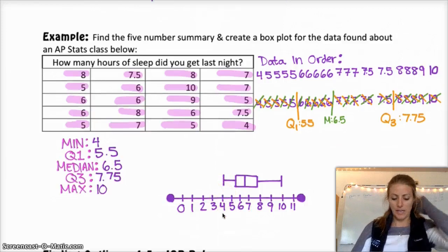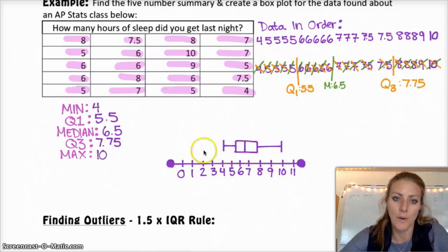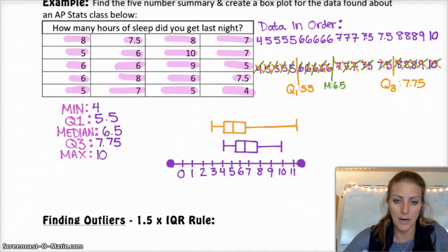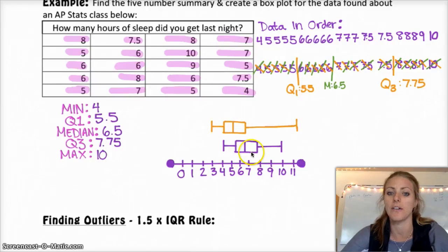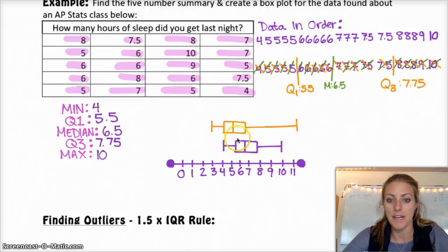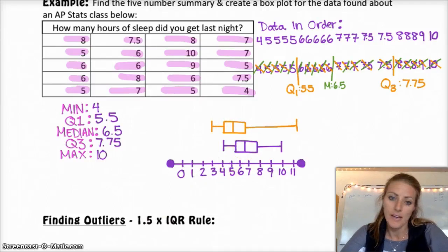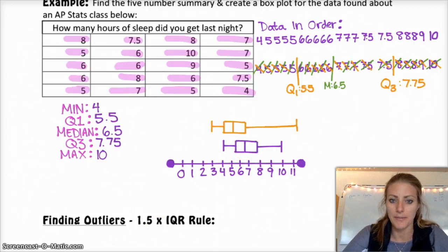Something that is kind of neat about box plots as well is you can, on the same graph, display two different sets of data. So perhaps I had another class that I wanted to compare the sleeping habits to. And I could just plot them on top of each other, and then I can compare, like, oh, the max of this one is higher than this one, and the median of this one is lower than this one, and then I could just talk about the different distributions.